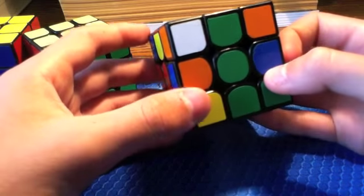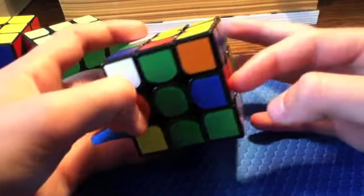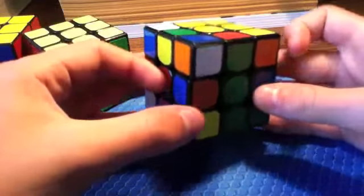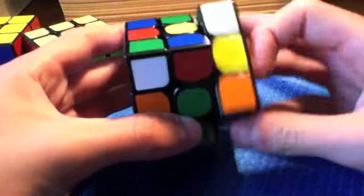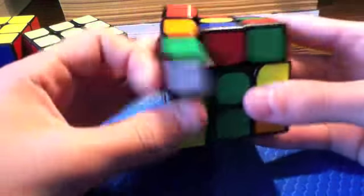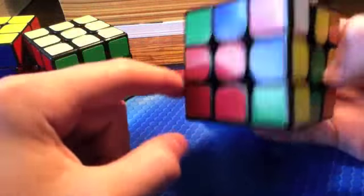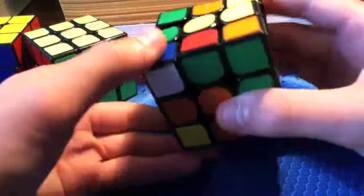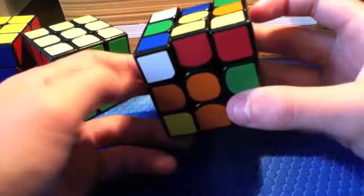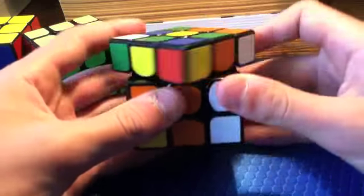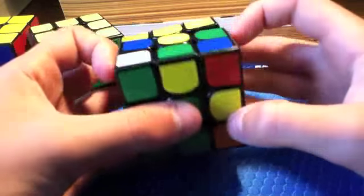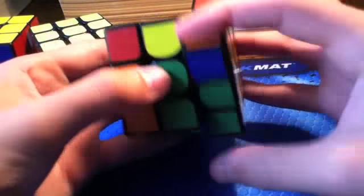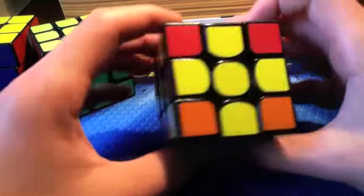Then, since this edge right here is oriented correctly, I can solve this pair into the back right here. See, that solves there. This pair I put into the back. This edge is oriented, which means I can just solve it here. And for this one, I need to rotate. And then there's the trick again. That trick can be really helpful.